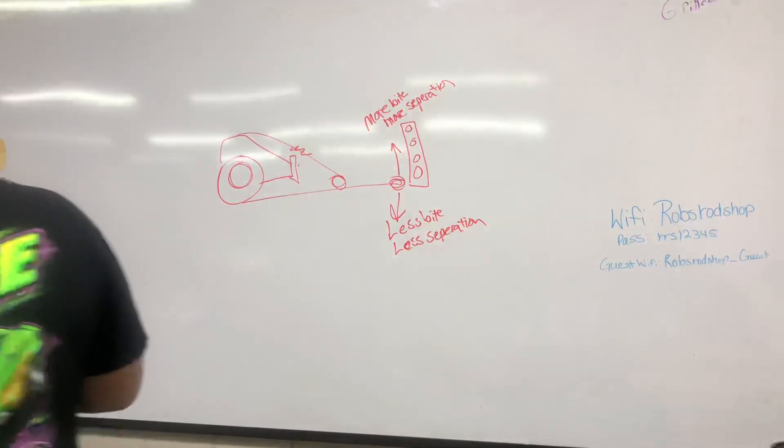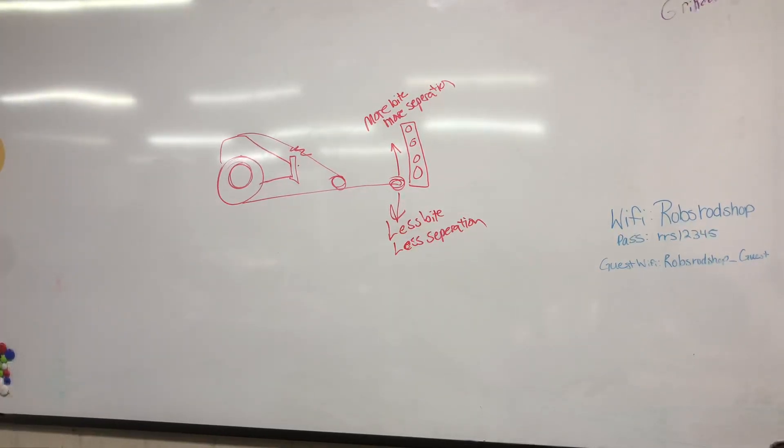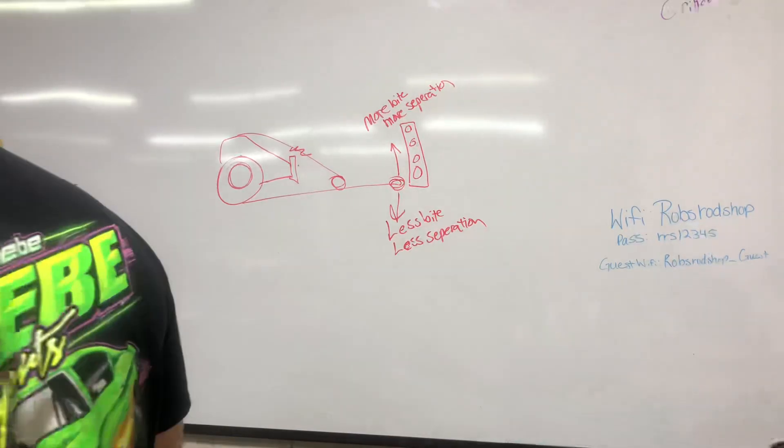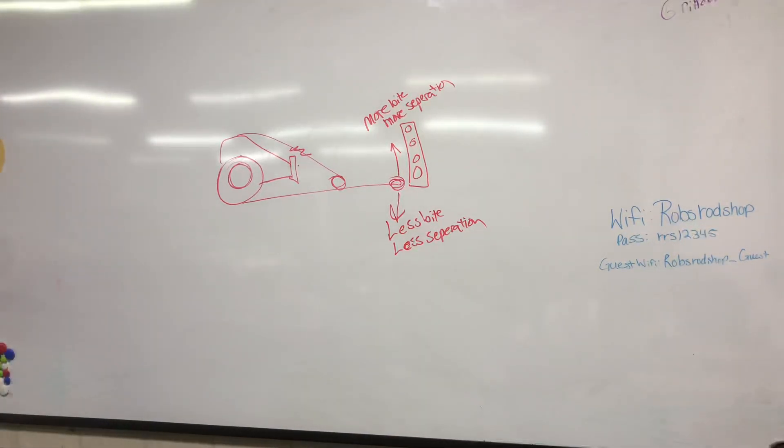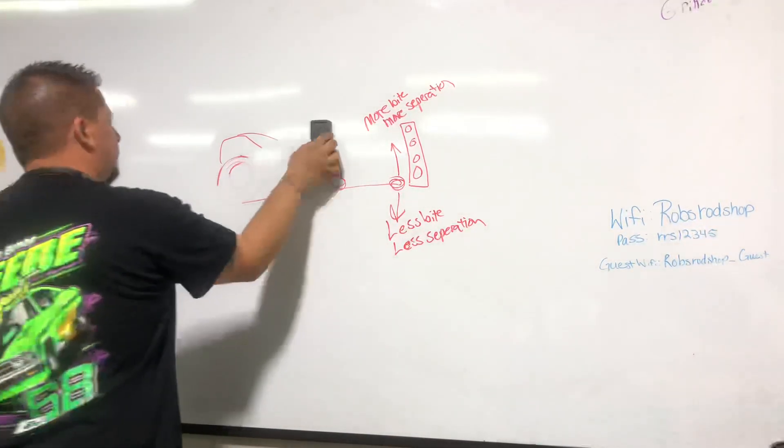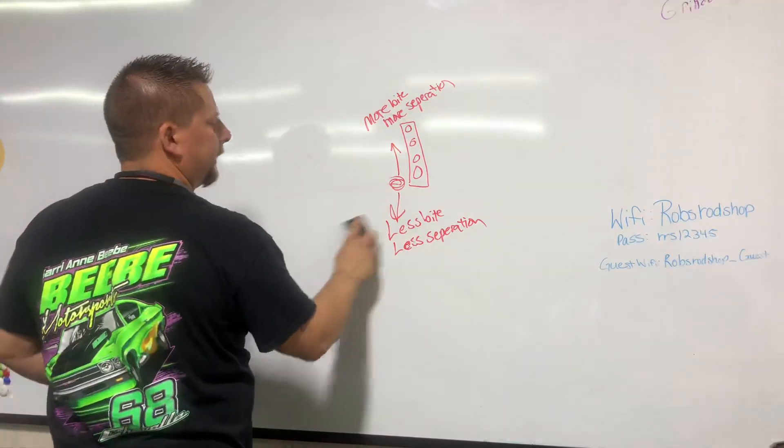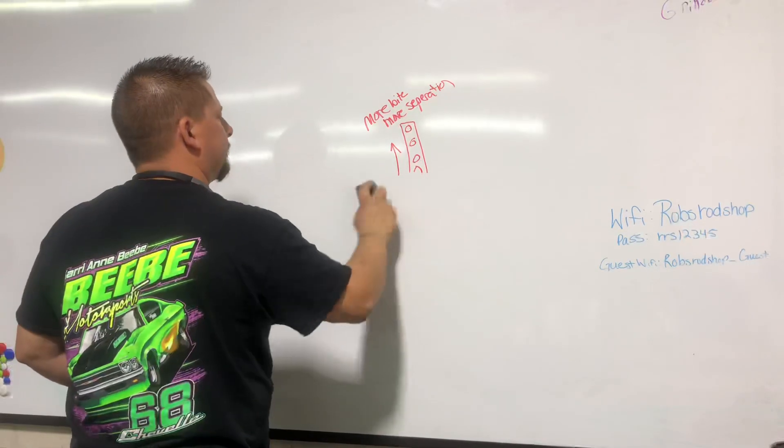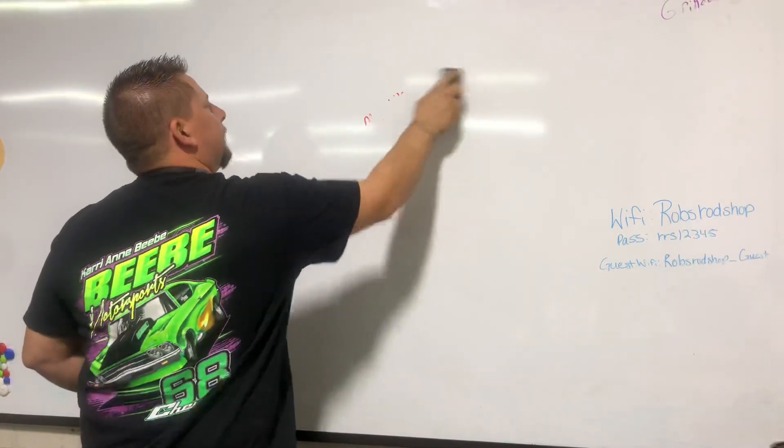All right, so now we're going to talk about torque arm suspensions. Torque arm suspensions are kind of weird. They were not designed for drag racing—they come from the factory with a good bit of anti-squat already in them, especially if the car is at factory ride height. So they work really good kind of just out of the box, but what they were designed for was road racing.